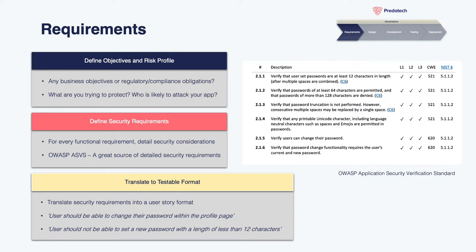Like your functional requirements, you'll also want to make sure your security requirements are easily measurable and testable. Write them out potentially in a user story format — this makes it easier to know when they've been effectively implemented and ensures they can be verified later in the build by those testing the application in staging.